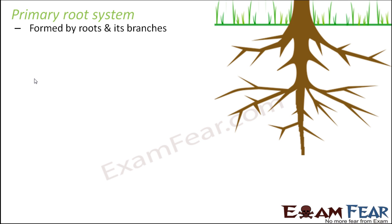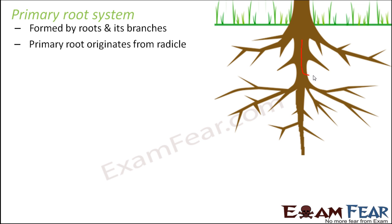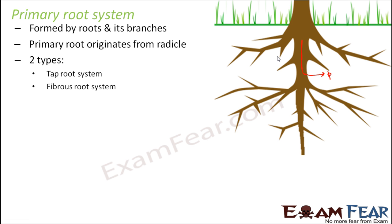The primary root system is made up of roots and its branches. The primary root originates from the radicle. As you can see in this figure, the primary root is a direct elongation of the radicle. From this primary root, you have different branches — that is, the secondary and tertiary roots. This type of root system is divided into two types: tap root system and fibrous root system.